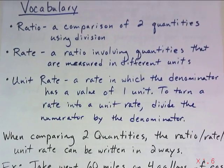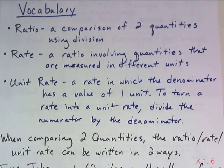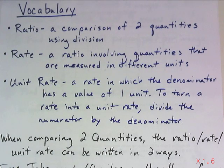When you're comparing two quantities, the rate, or the ratio, or the unit rate, whichever one you're looking at, can be written in two ways. Which one's in the numerator and which one's in the denominator, and that's going to affect your outcome. It depends on what you're trying to find as to how you should set up the original rate.